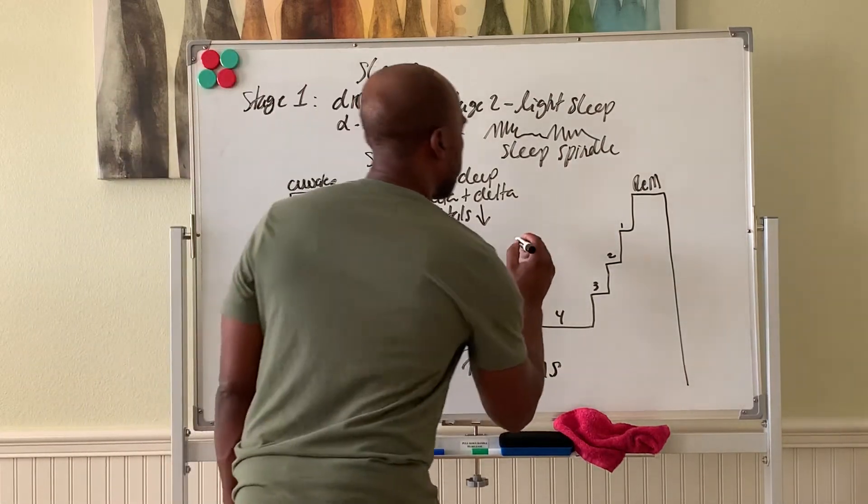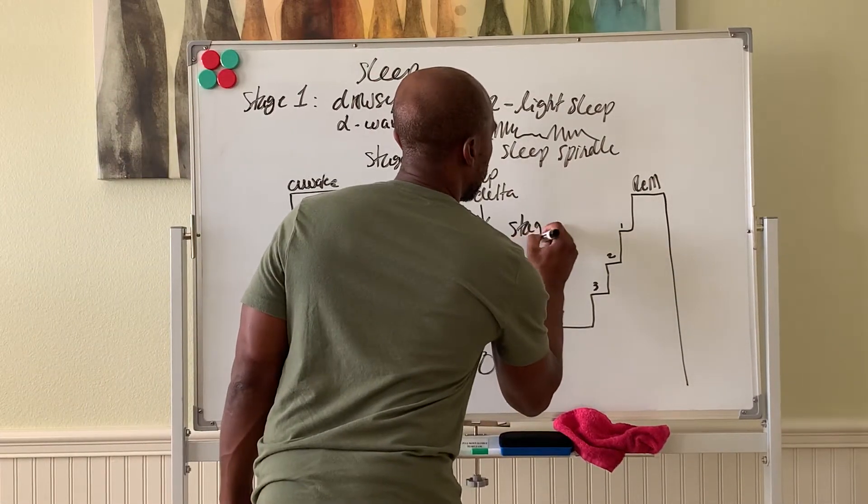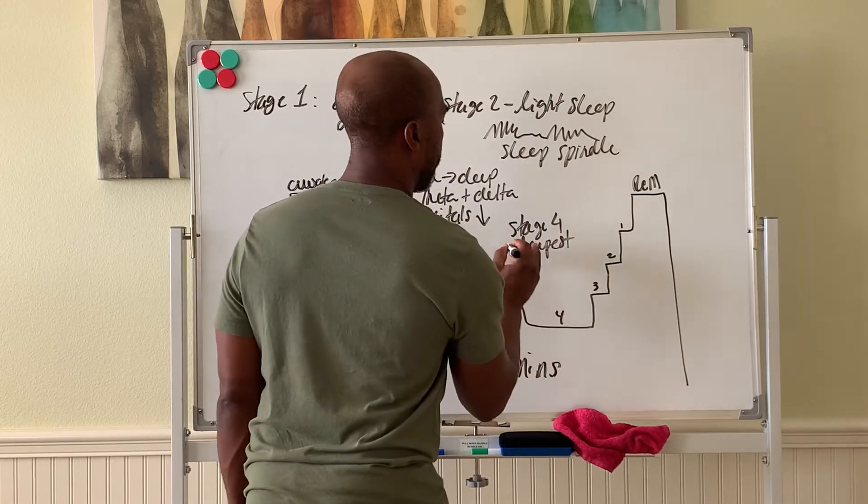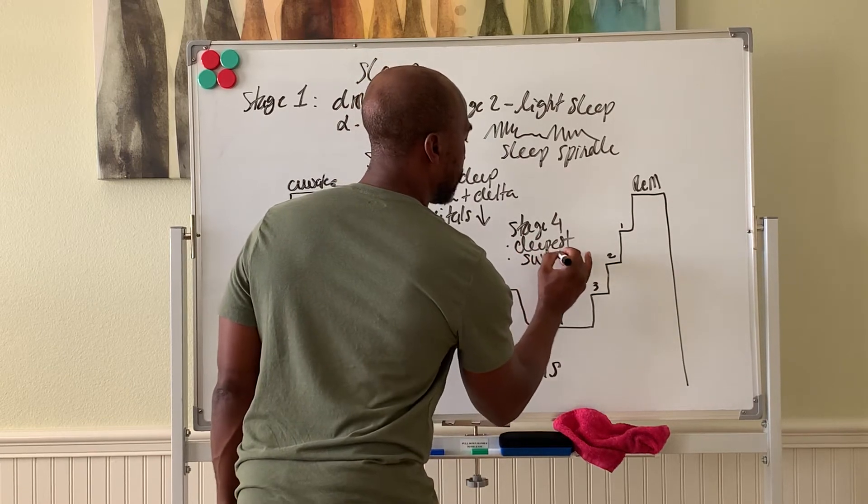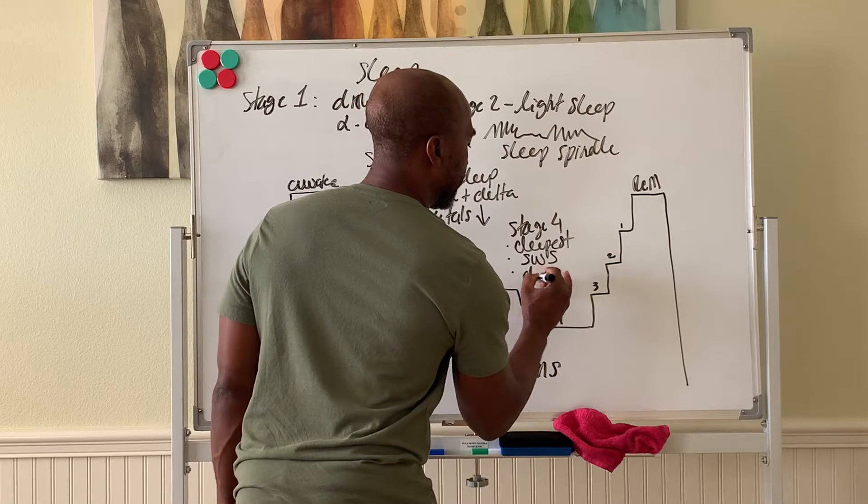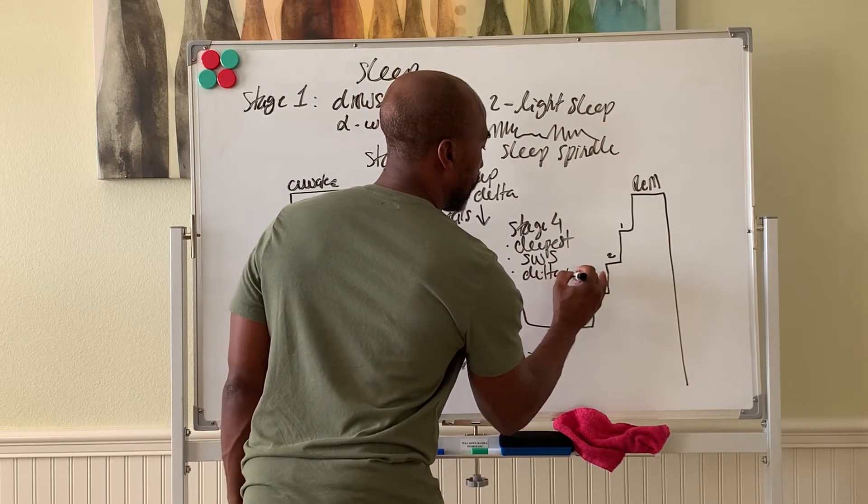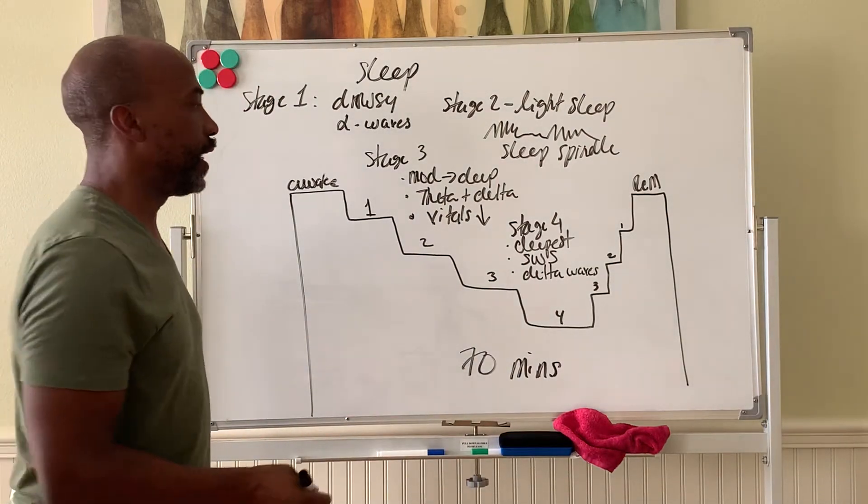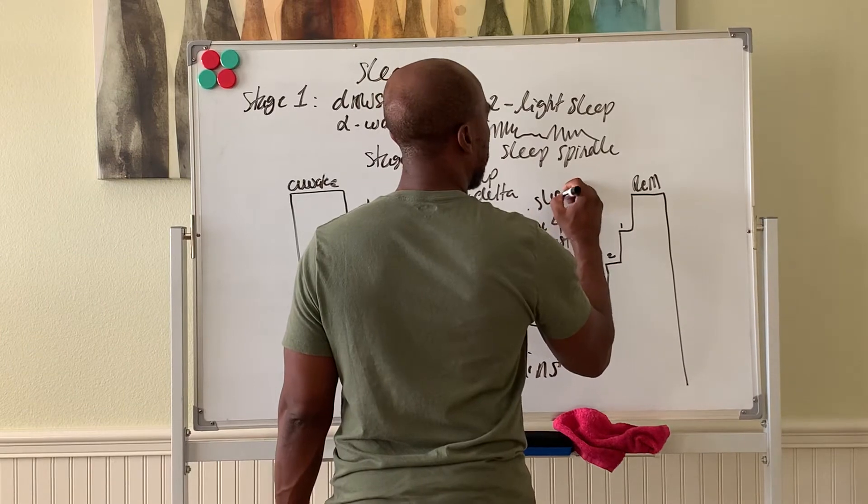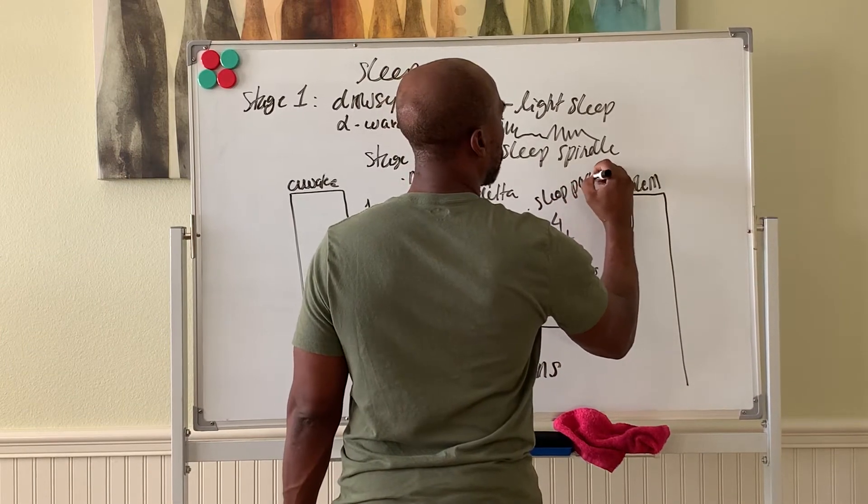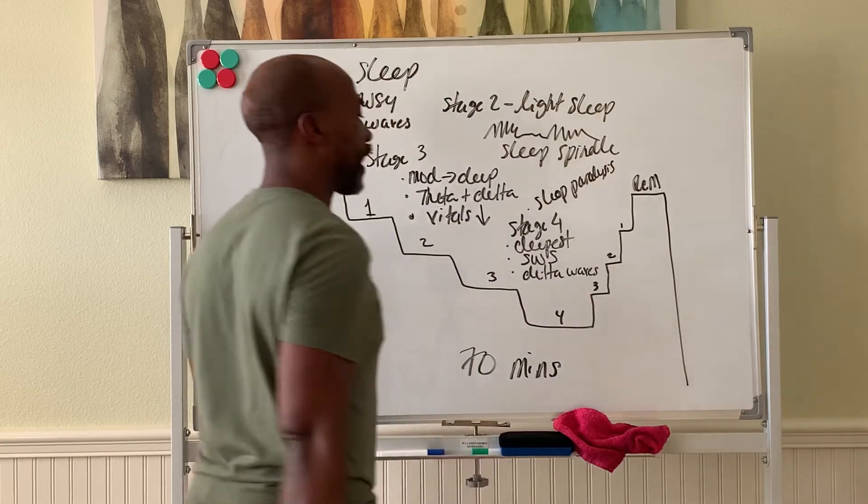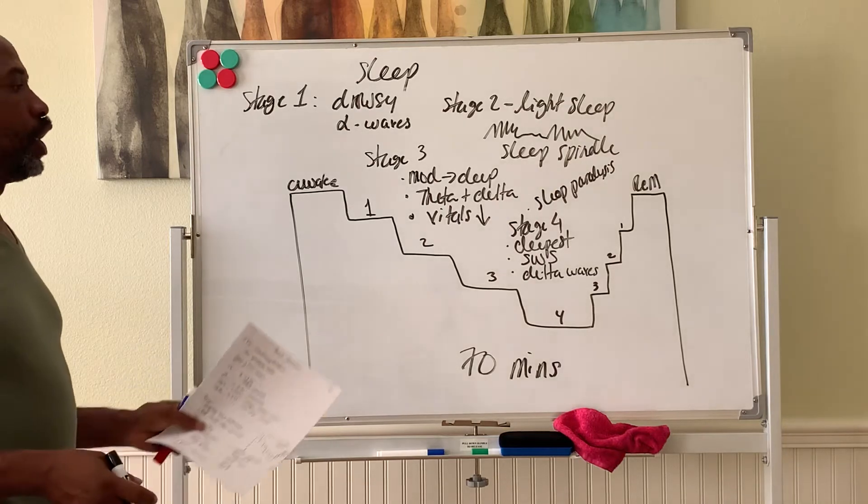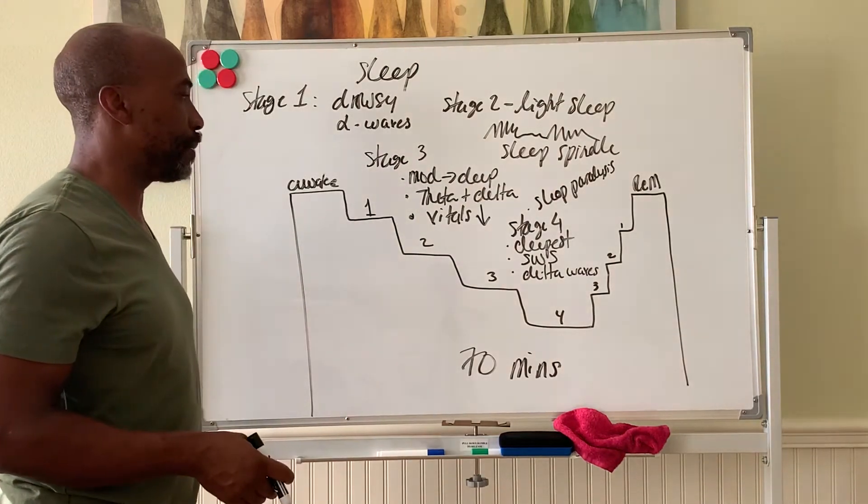Then we have stage four sleep, your deepest sleep, also called slow wave sleep because it's dominated by delta waves. It's hardest to wake you from stage four sleep. You have extreme sleep paralysis here. Muscles are inhibited from moving, so you can't move really. You can still breathe and twist, but as far as voluntary movements go, during this state you're in a very deep form of sleep paralysis.